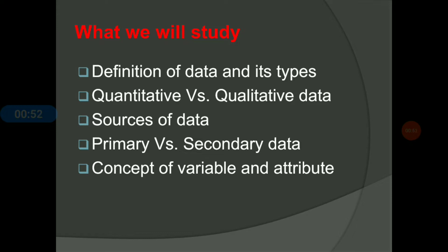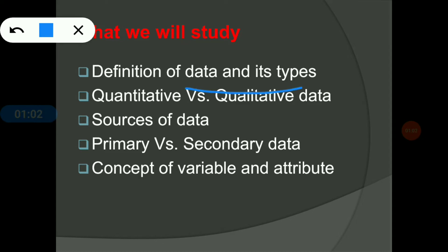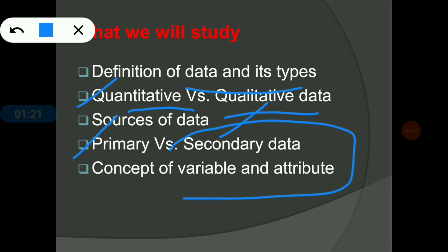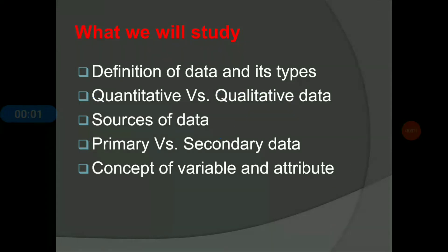Here is an overview of this class. The first concept is the definition of data and the types of data. The second concept is the differences between quantitative and qualitative data. The third one is sources of data. The fourth one is differences between primary and secondary data. And the last and most important concept is the concept of variable and attribute.